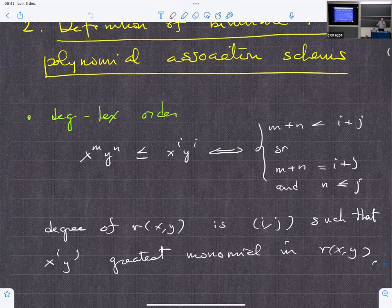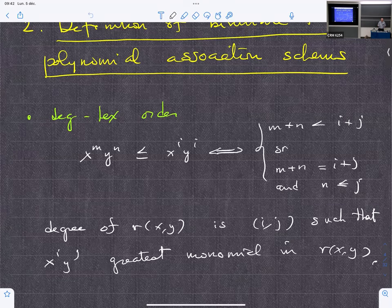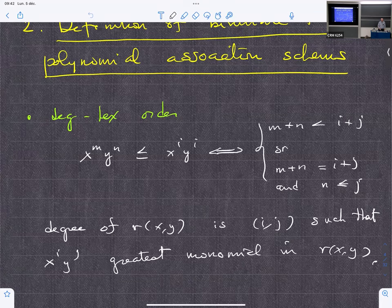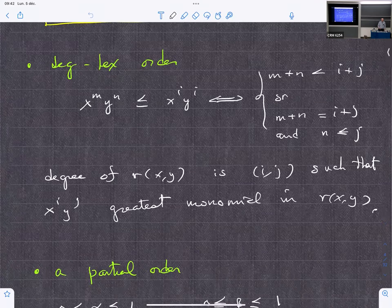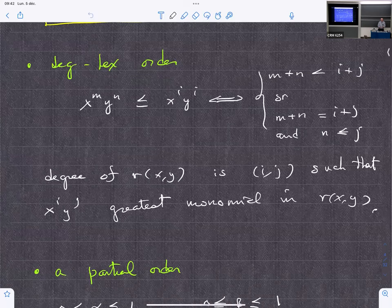It goes from A_0 to A_N. If these are adjacency matrices, A_0 is 1, they sum to the all-1 matrix, they are symmetric, and they obey this relation which defines the Bose-Mesner algebra.